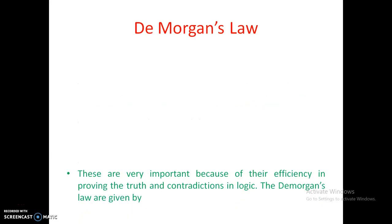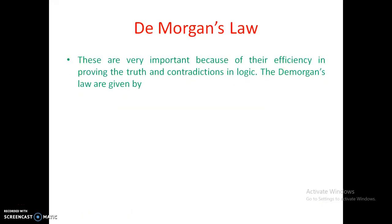The final laws are De Morgan's laws, which are very important. The first law states: (A union B) bar = A-bar intersection B-bar. If you have a union with a bar over both, on the other side they are separated and intersected. The second law states: (A intersection B) bar = A-bar union B-bar. These are the main properties and laws of classical sets.